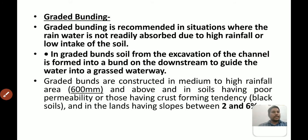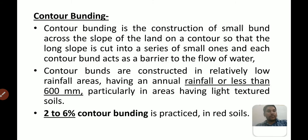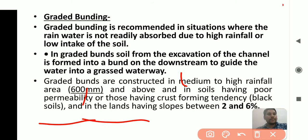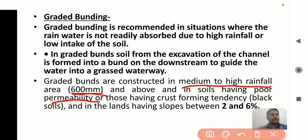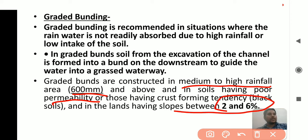Graded bunding is recommended where rainwater is not readily absorbed due to high rainfall or low intake of the soil. It applies to medium to high rainfall areas, soil having poor permeability, and slope of 2 to 6 percent.